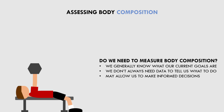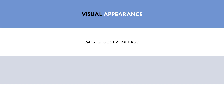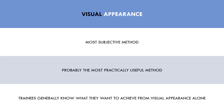The first and easiest method is visual appearance. This refers to simply looking at yourself in the mirror, in photos, or in videos. While this is the most subjective and least accurate method, it is probably also the most helpful. Trainees can look at themselves and pretty much know right away what they want to achieve with training and nutrition. In general, most trainees are going to want an increase in muscle mass and a decrease in body fat — we don't always need an objective number to tell us this.